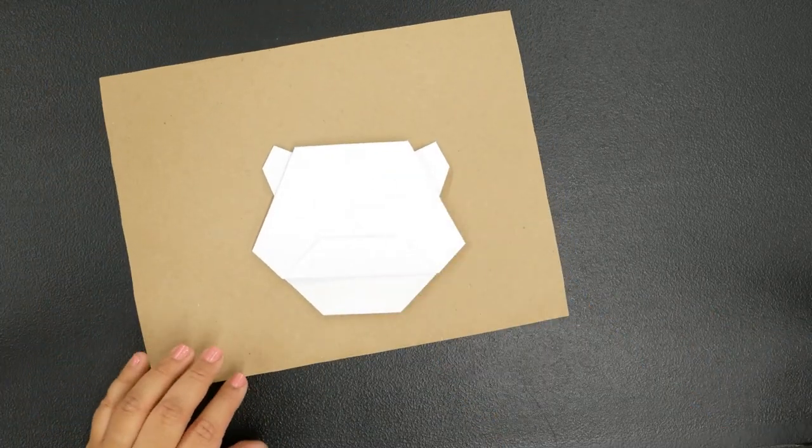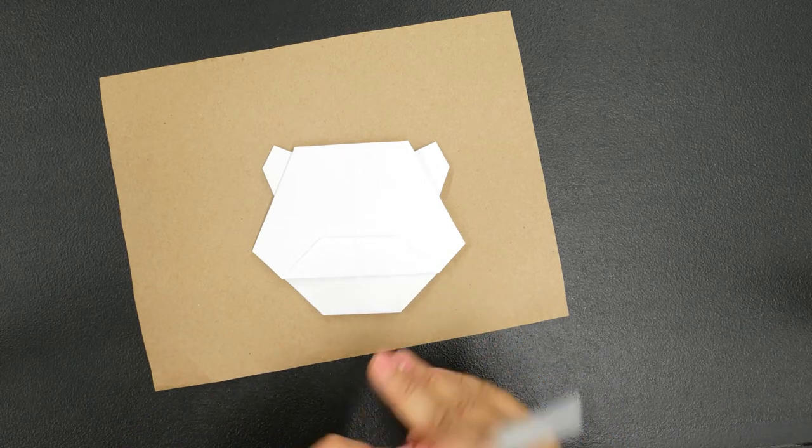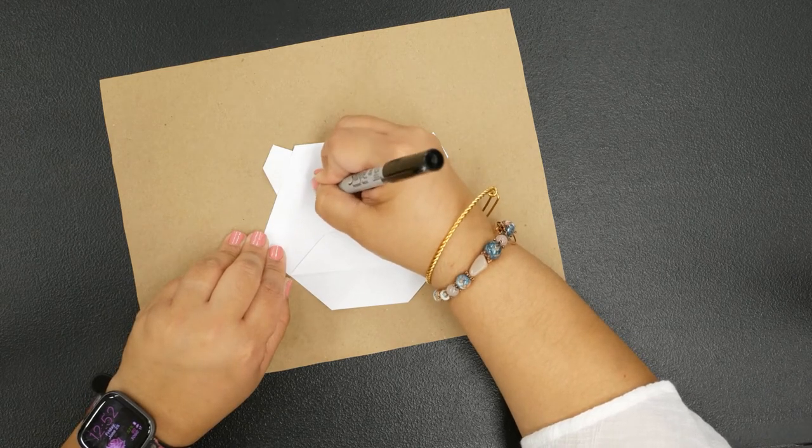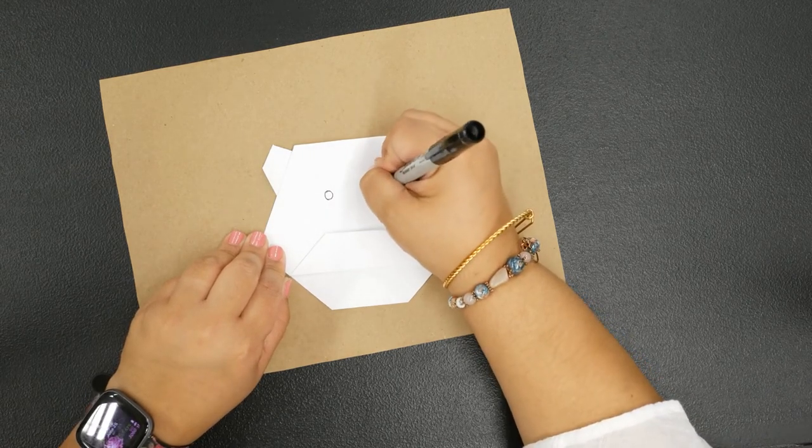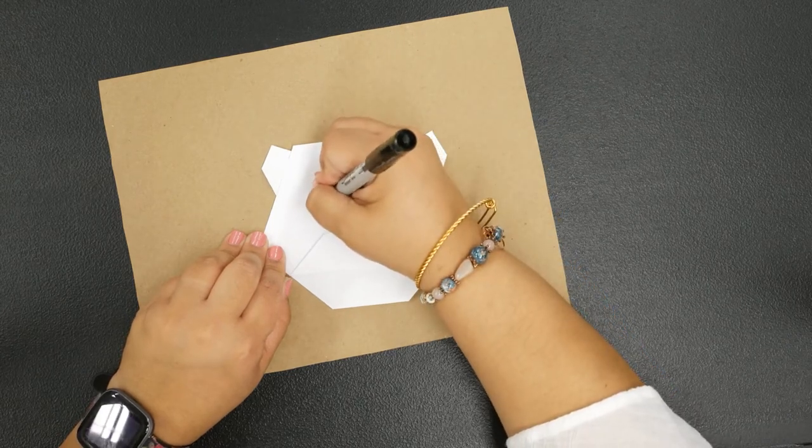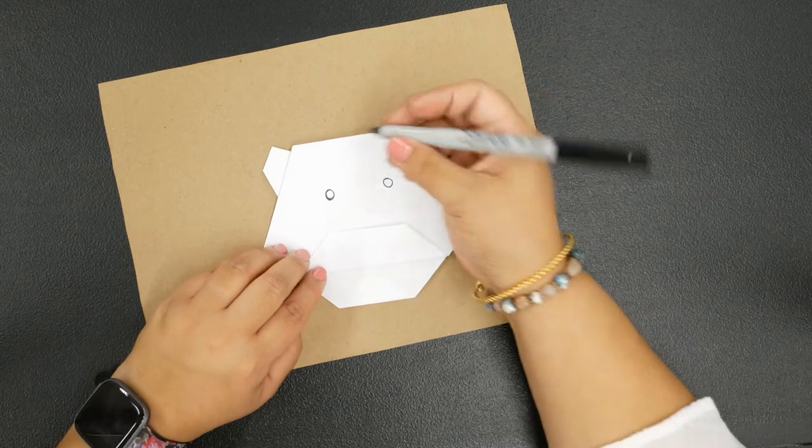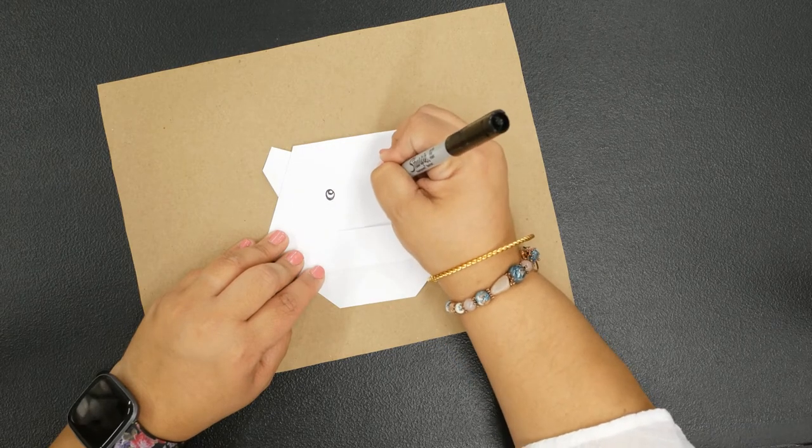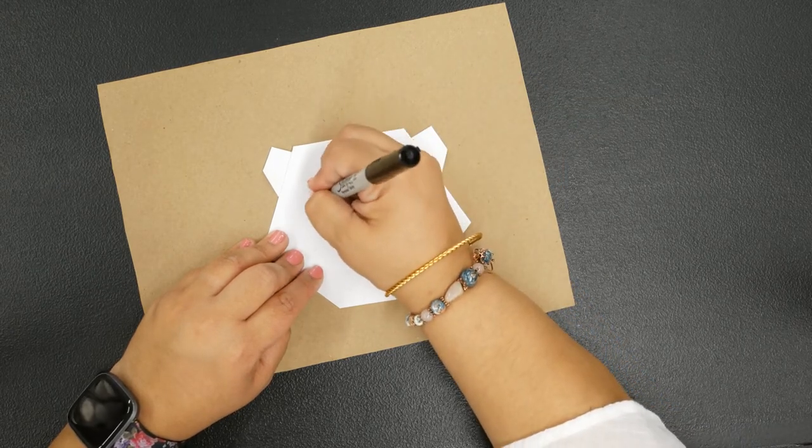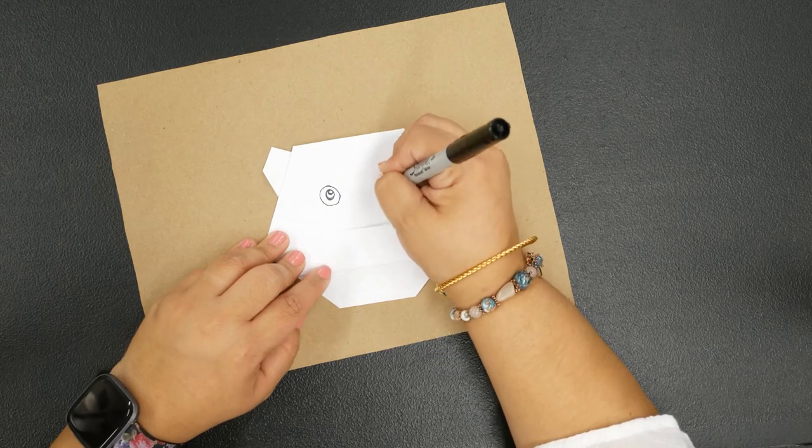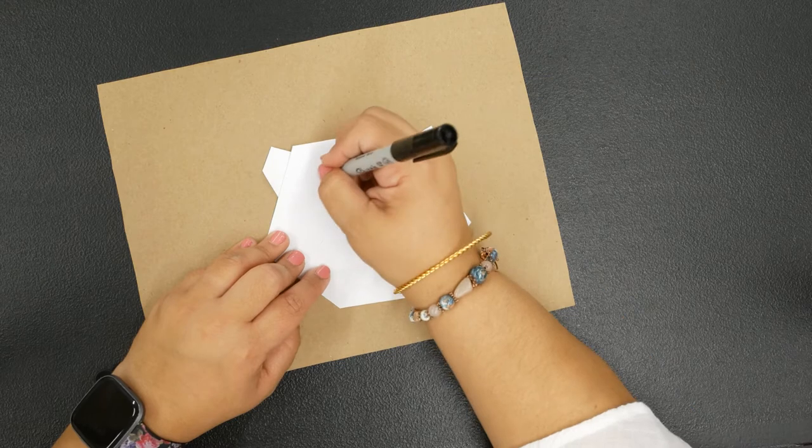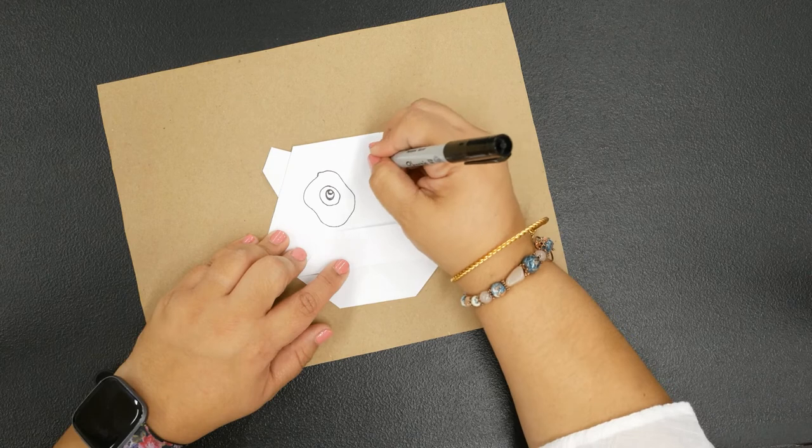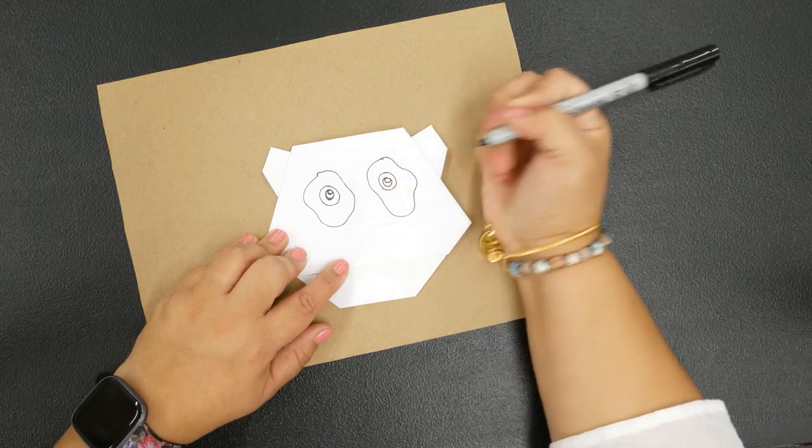I'm going to draw my panda eye. Panda bears have small eyes but what they do have is a patch around their eye. I'm going to create a patch around its eye just like this.